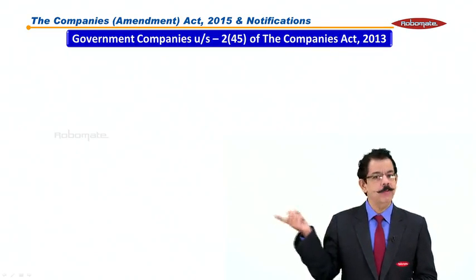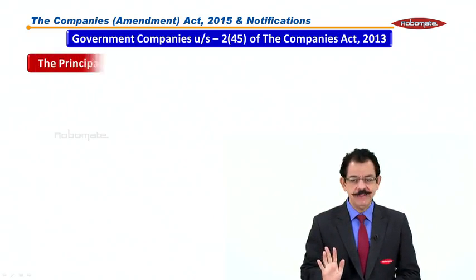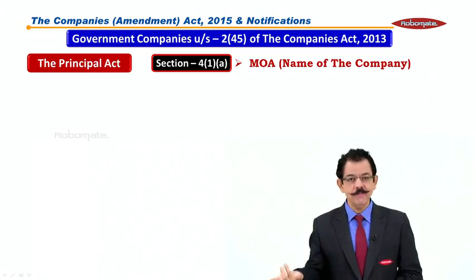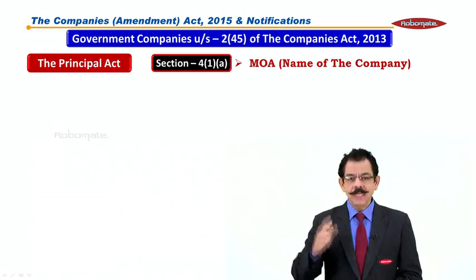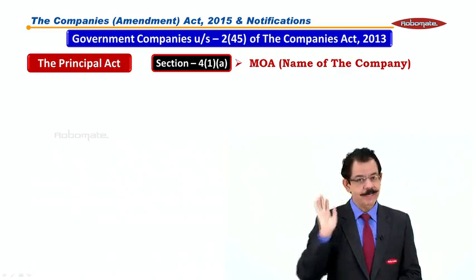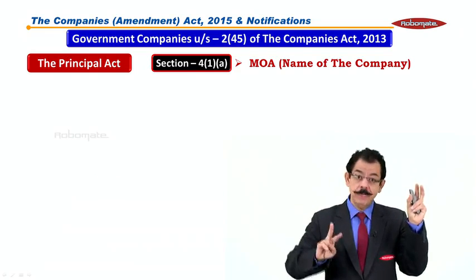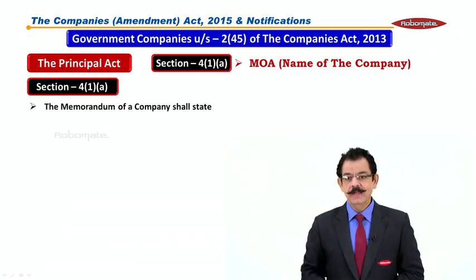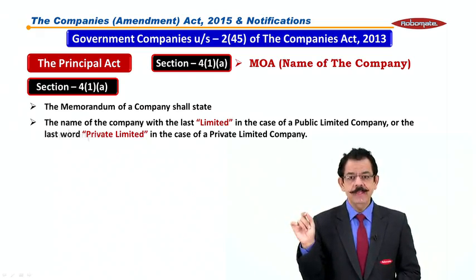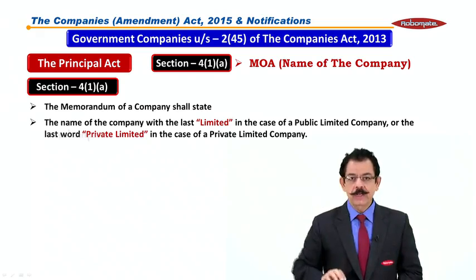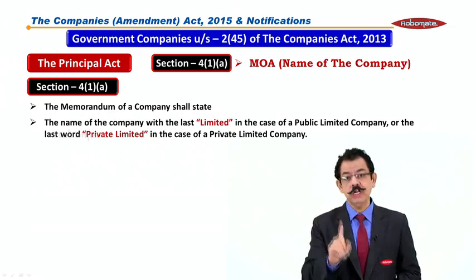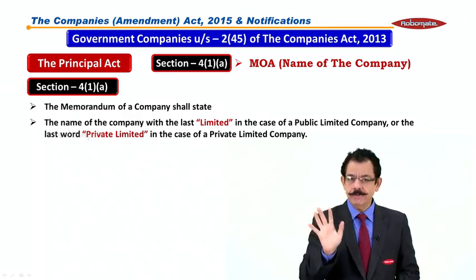Government companies — we know that Section 2, clause 45 is defined in the principal Act. Section 4(1A) deals with the memorandum, specifically the name of the company. The government company notification is applicable to all companies that are government companies, including Section 8 companies where applicable. Now this is about government companies.